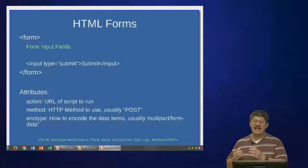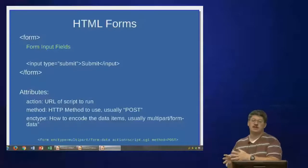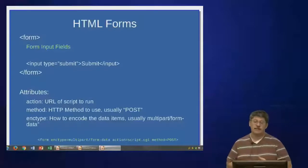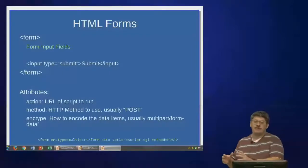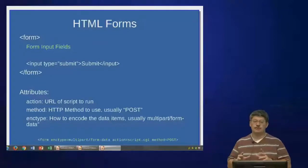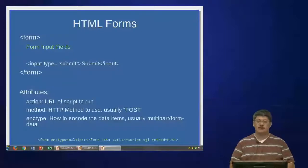The enctype attribute stands for encoding type — it tells the web browser how to split up the different pieces of information so the server can interpret them. We are always going to use multipart/form-data for this, which is the standard way to encode form data. There are other encoding types, and you can read about them in the HTTP RFC, but they're well beyond the scope of this class.